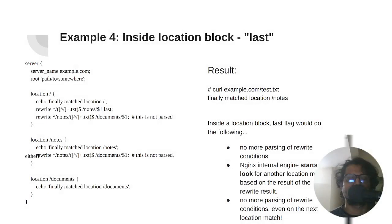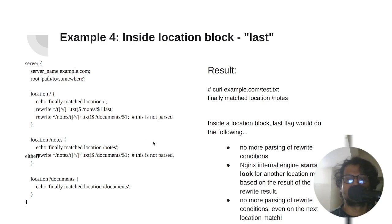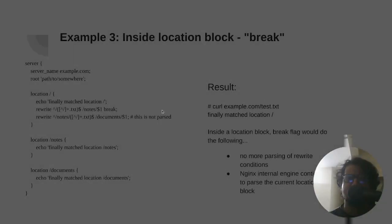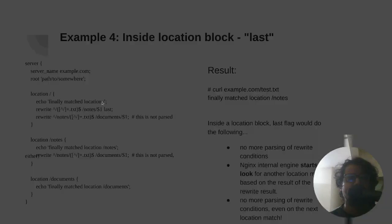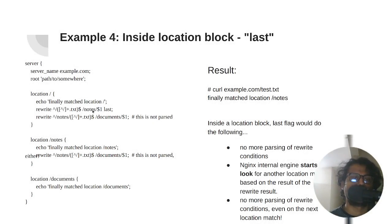The last example is inside a location block with the 'last' flag. It will find the last matching rewrite rule, come here, but it will not stop — it will look for the next location and come here. This is the key difference between break and last: break will immediately stop processing, but last will continue and go to the next location, finding the next matching location block.